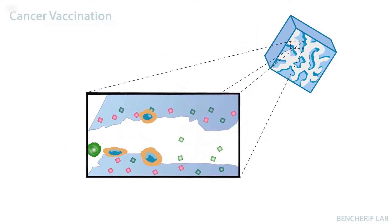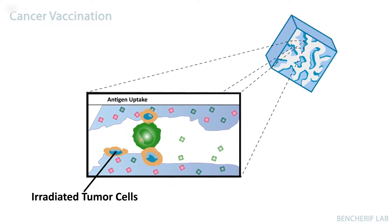Once recruited, the dendritic cells uptake and process tumor-associated antigens. Additionally, they're activated in the presence of activating factors such as adjuvants.